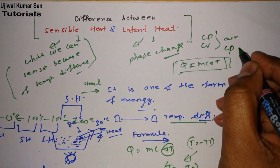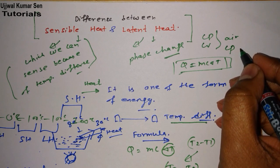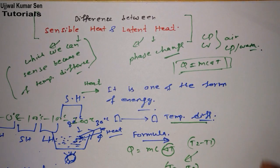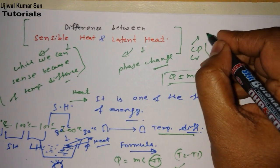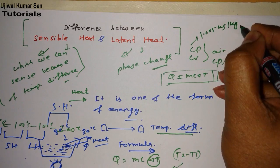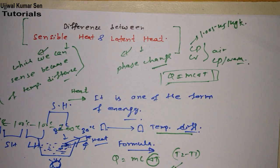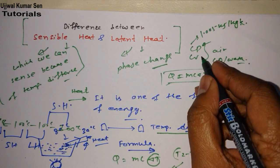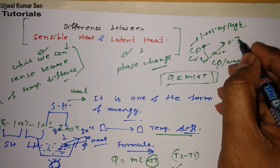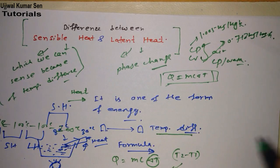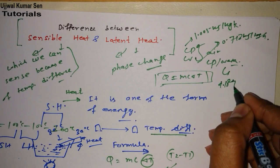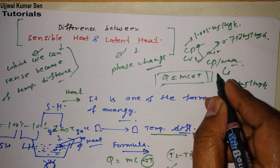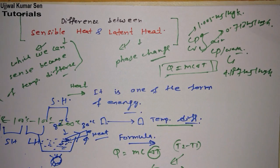For water, you must know the specific heat value. CP for air is 1.005 kilojoules per kg Kelvin. CV for air is 0.718 kilojoules per kg Kelvin. And for water, CP is 4.187 kilojoules per kg Kelvin — only CP is what you need to remember. These are the most basic things you need to remember to solve numerical problems.